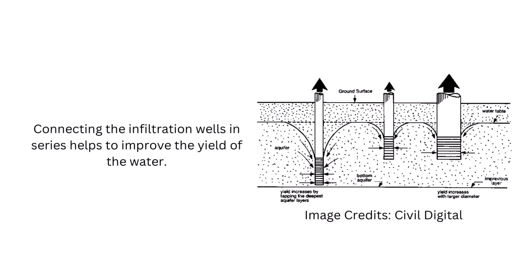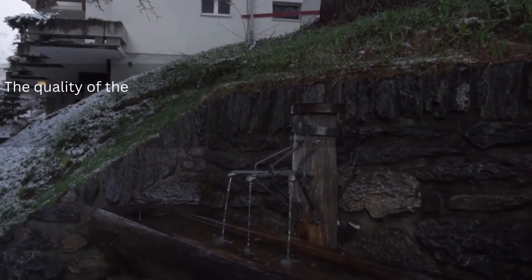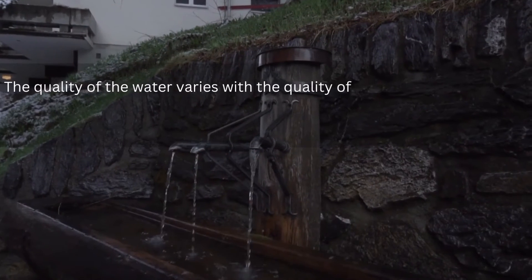Connecting the infiltration wells in series helps to improve the total yield of the water. The quality of the water varies with the quality of the river water and the depth as well as the distance of the well from the river bank.